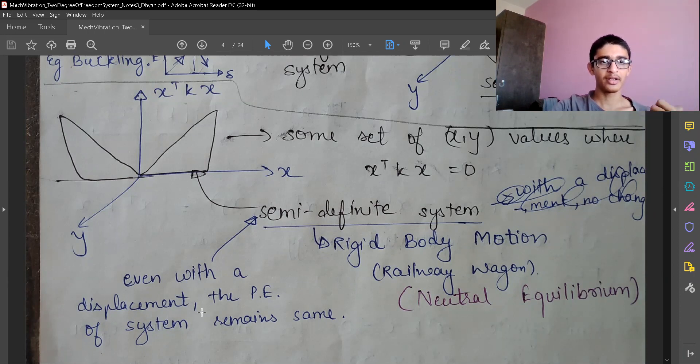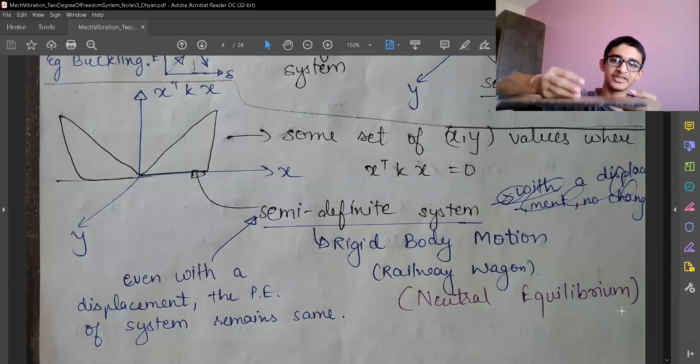It is not going to have any new motion. It can be understood as rigid body motion, which we have seen in two degrees of freedom system for railway wagon when they were cutting locked. From physics point of view, we can understand this as neutral equilibrium.